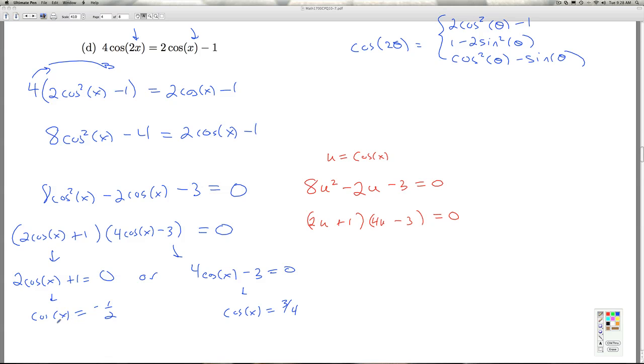Cosine x equals negative 1 half. I know those angles. That's a common angle. Cosine is negative over there in quadrant 2 and quadrant 3. So reference angles, pi over 3. So I get 2 pi over 3 plus 2 pi k, or 4 pi over 3 plus 2 pi k.